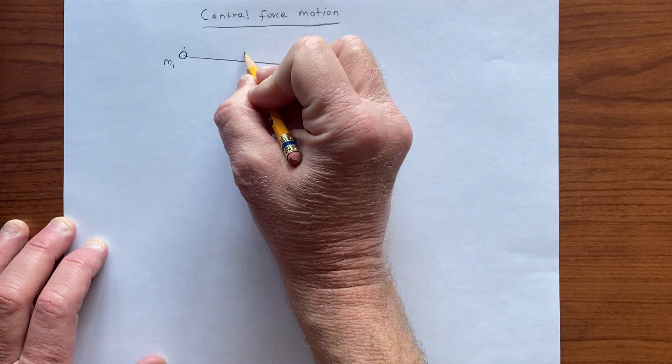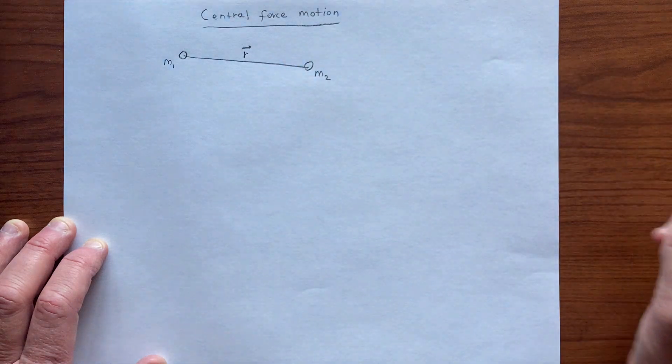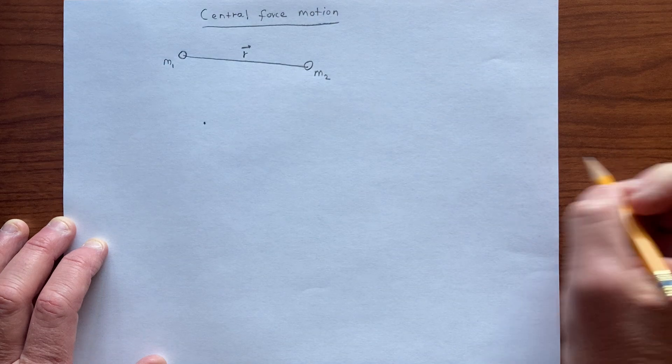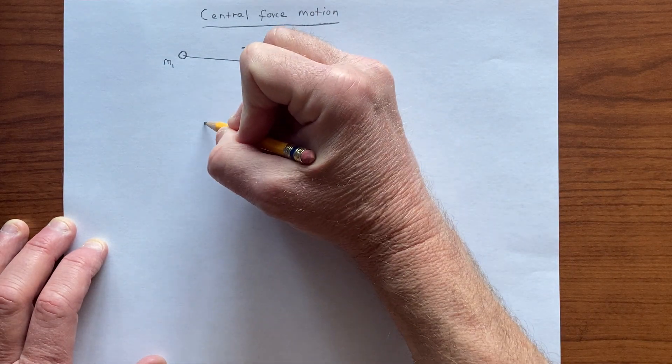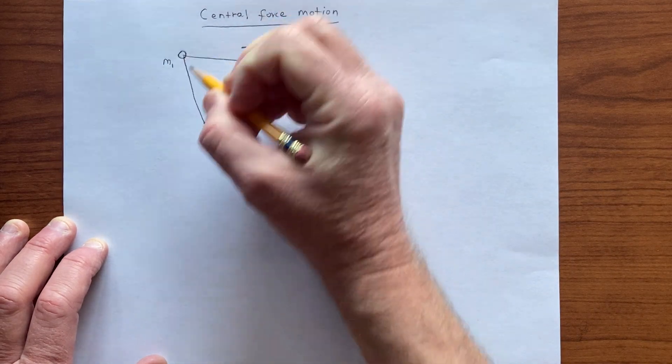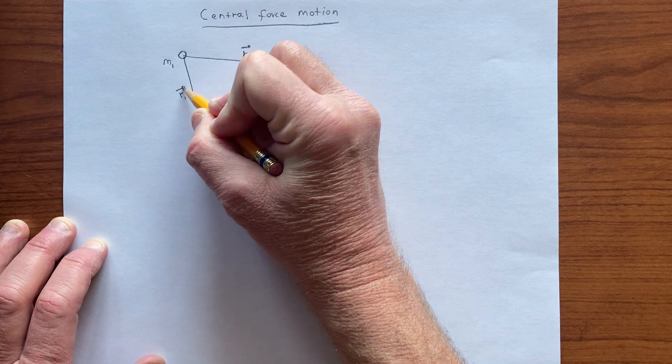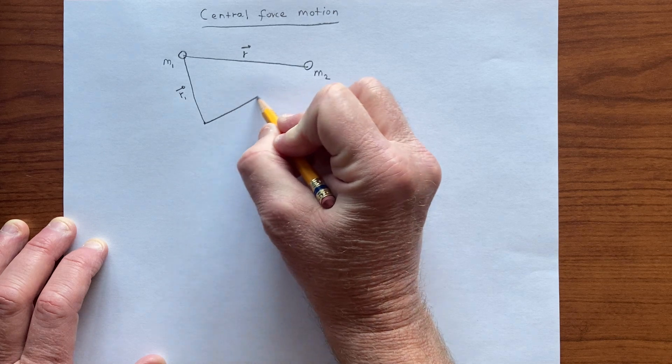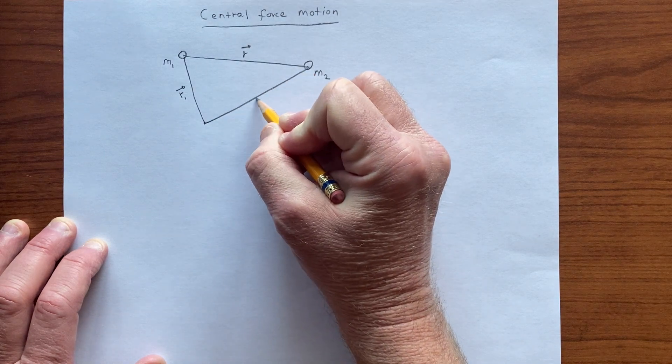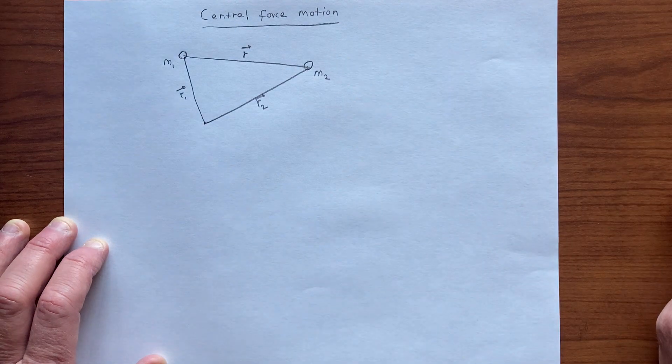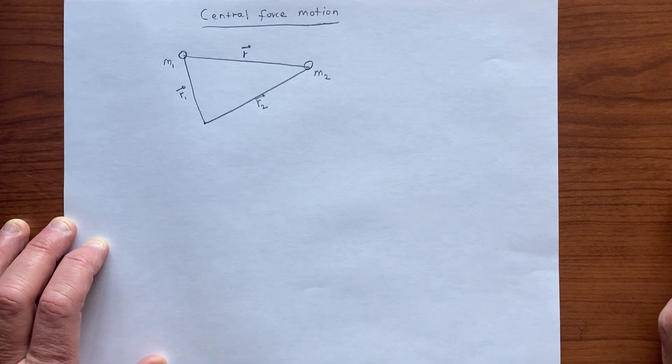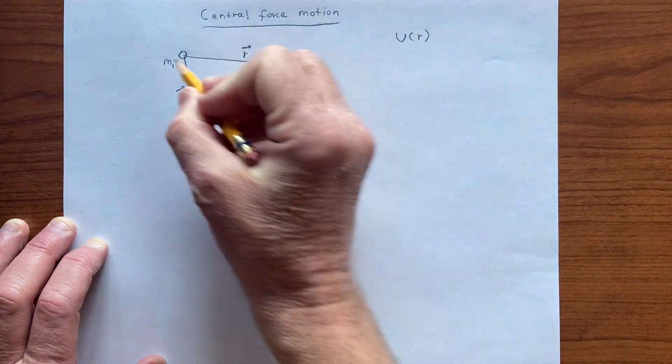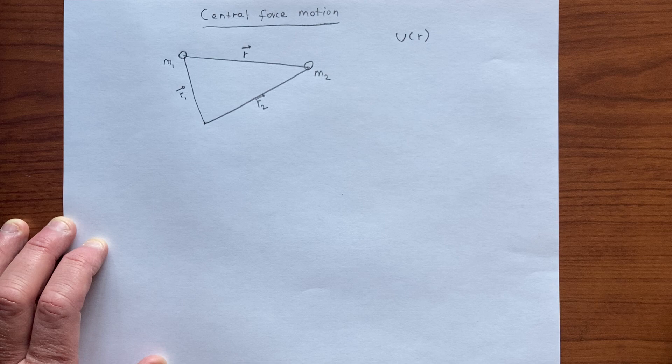And we can say that this is the vector r, and so if this is the origin of the coordinate system, then we have a vector r1 from the origin to the object of mass m1, and a vector r2 from the origin to the object of mass m2. And so we're considering a central potential that depends on the magnitude of that distance r.